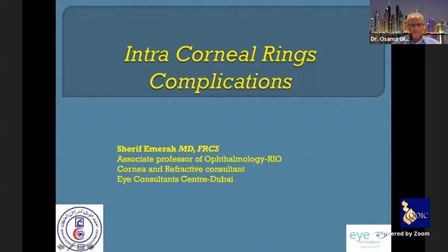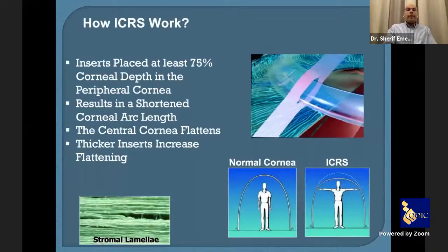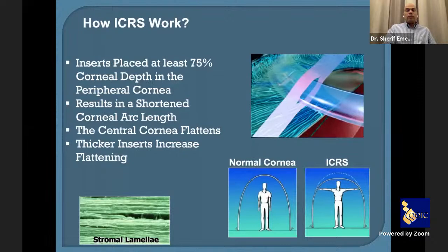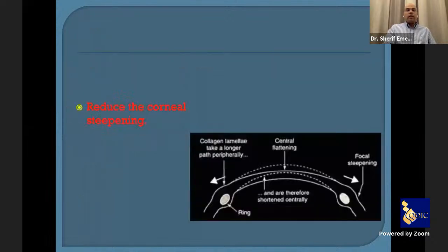My talk today is on intracorneal ring complications. The mechanism of action: the ring is inserted at about 75% corneal depth in the peripheral cornea. It separates the corneal lamellae, resulting in shortening of the corneal arc length, so the central cornea flattens and the peripheral cornea becomes steeper. The thicker the insert, the greater the flattening.